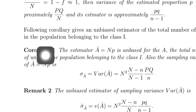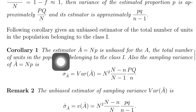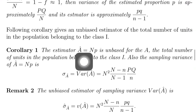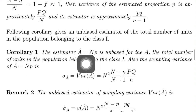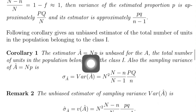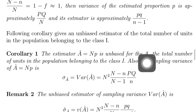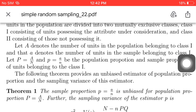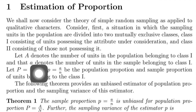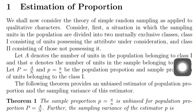Now we discuss a corollary. A-hat is defined as N times small p, and it is an unbiased estimator for capital A — the number of units in the population belonging to class 1. Since A-hat is N times small p, and N is a constant, the variance of A-hat equals N squared times the variance of p.